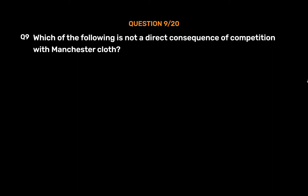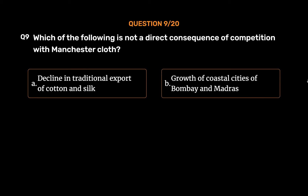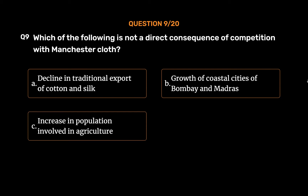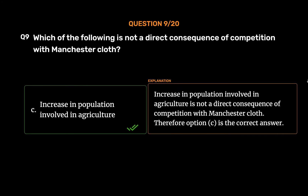Question 9: Which of the following is not a direct consequence of competition with Manchester cloth? Options: A. Decline in traditional export of cotton and silk; B. Growth of coastal cities of Bombay and Madras; C. Increase in population involved in agriculture; D. Decline in cities of Surat and Masulipatnam. The correct answer is Option C: Increase in population involved in agriculture is not a direct consequence of competition with Manchester cloth.